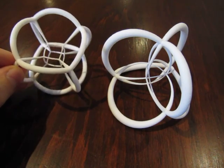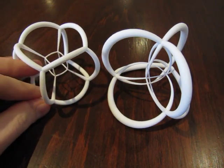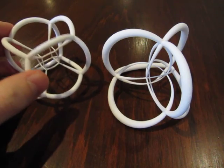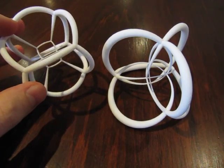A polytope is a higher dimensional analog of a usual three-dimensional polyhedron, like a cube, tetrahedron, or octahedron.